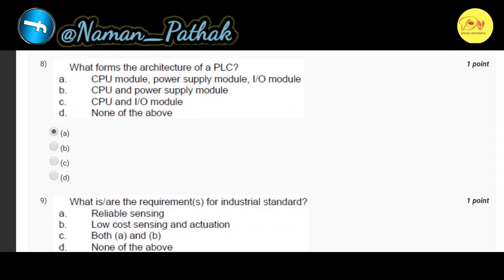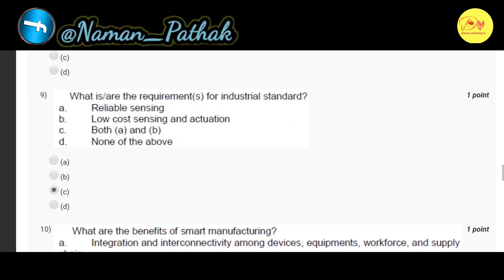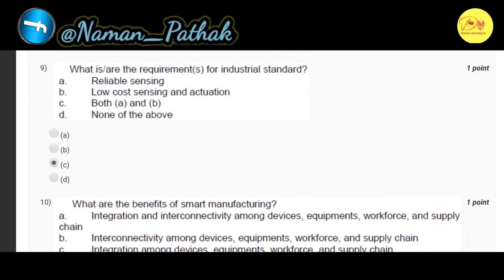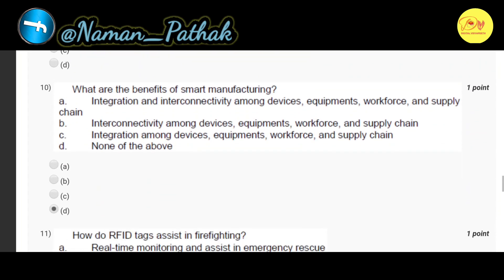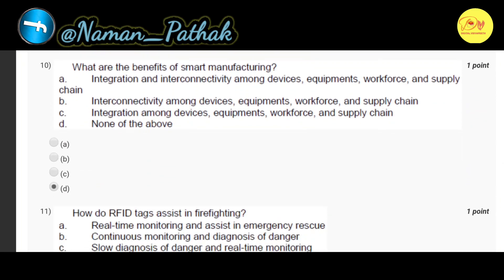The correct option for the PLC architecture question is A — CPU module, power supply module, and input output module. Our ninth question is: what are the requirements for industrial standard? The correct option is C, both A and B — that is reliable sensing, low-cost sensing, and actuation.